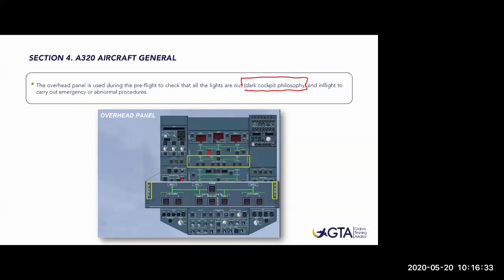We use the overhead panel during pre-flight to check all lights are off, and in-flight to carry out emergency or abnormal procedures. It is very important to know that normally no memory actions are carried out there. Those emergency or abnormal procedures are always carried out with a procedure in front of us - either the ECAM or the QRH procedure. We always follow a guideline, a list, a procedure before touching any button. This is the aircraft philosophy.